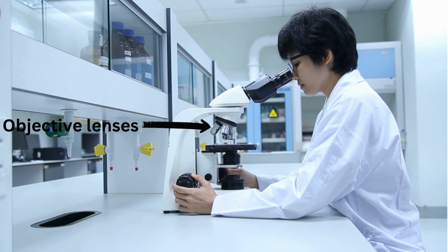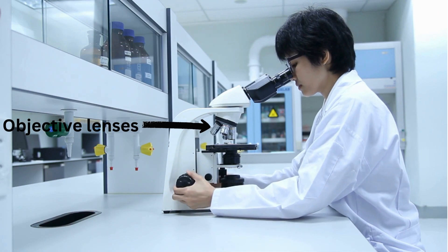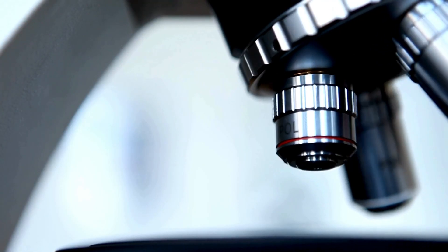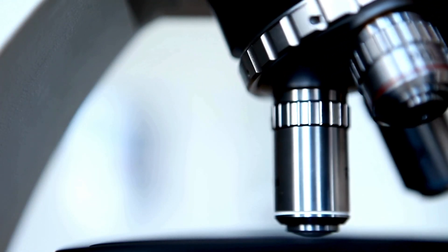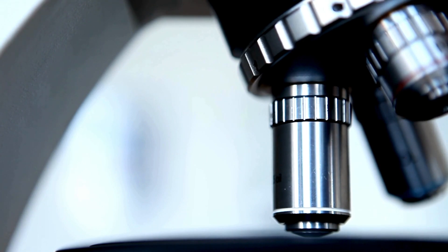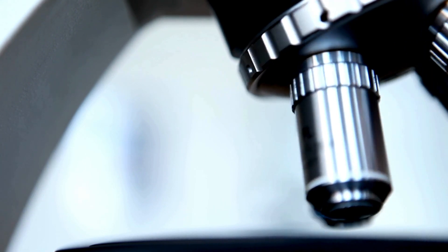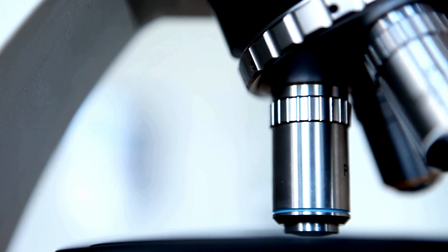Objective lenses. Objective lenses are located on a rotating turret near the nosepiece. They come in various magnifications such as 4x, 10x, 40x, and 100x. The user can switch between these lenses to achieve different levels of magnification.